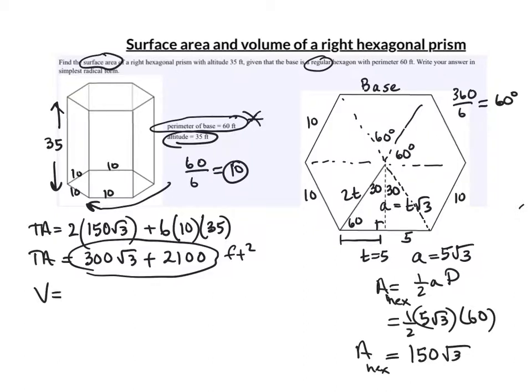The volume is the easier of the two. It's the area of the base of a prism times the height or altitude of a prism. So it's the area of the hexagon times the distance between the hexagons. Well, we already did the area of the hexagon. It was 150 root 3. And the distance between the hexagons was the 35, the altitude.